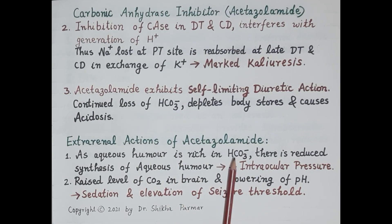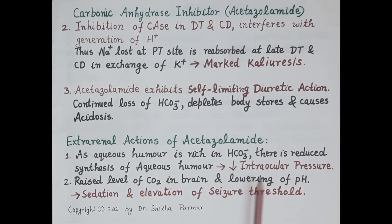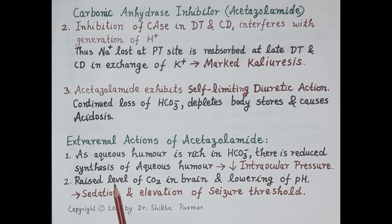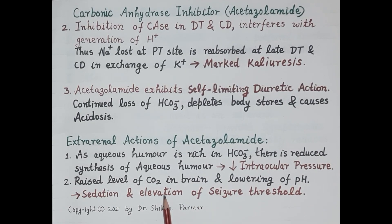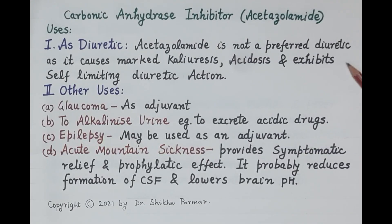Regarding extra-renal actions: the aqueous humor of the eye is rich in bicarbonate ions. Acetazolamide causes loss of bicarbonates in the urine, reducing synthesis of aqueous humor, lowering intraocular pressure, and is therefore used as an adjuvant in the treatment of glaucoma. Additionally, raised levels of carbon dioxide in the brain and lowering of pH cause sedation and elevation of the seizure threshold, so acetazolamide is also used as an adjuvant in epilepsy.